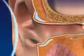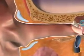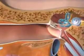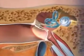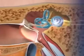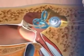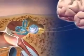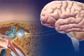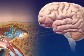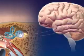Sound waves are collected by the auricle or outer ear and sent to the auditory canal, tympanic membrane, ear bones, and then to the cochlea where the vibrations are changed by the organ of Corti to nerve impulses and transmitted by the auditory or cochlear nerve to the temporal lobe of the brain for interpretation.